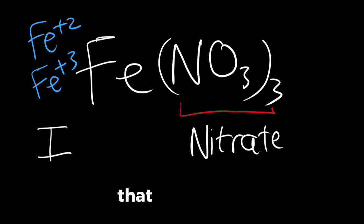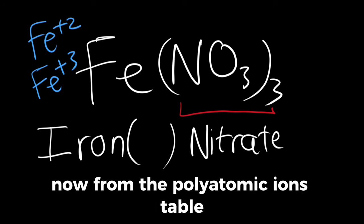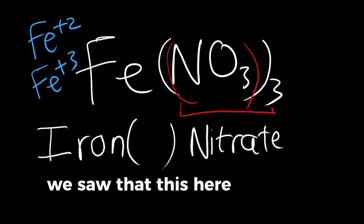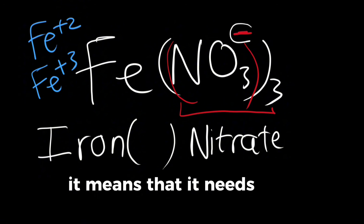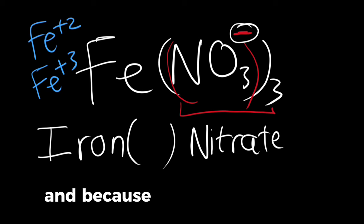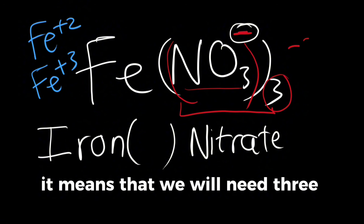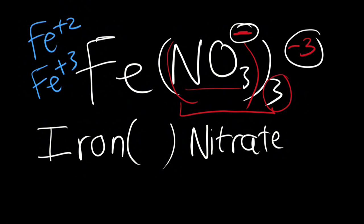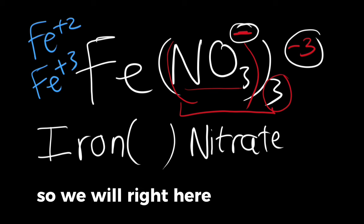Now, what should we do? From the polyatomic ion table we saw that nitrate is written with a minus. It means that it needs one electron. Because we have three of this nitrate, it means we will need three electrons. So the iron will give three electrons, and we will write here iron(III) nitrate.